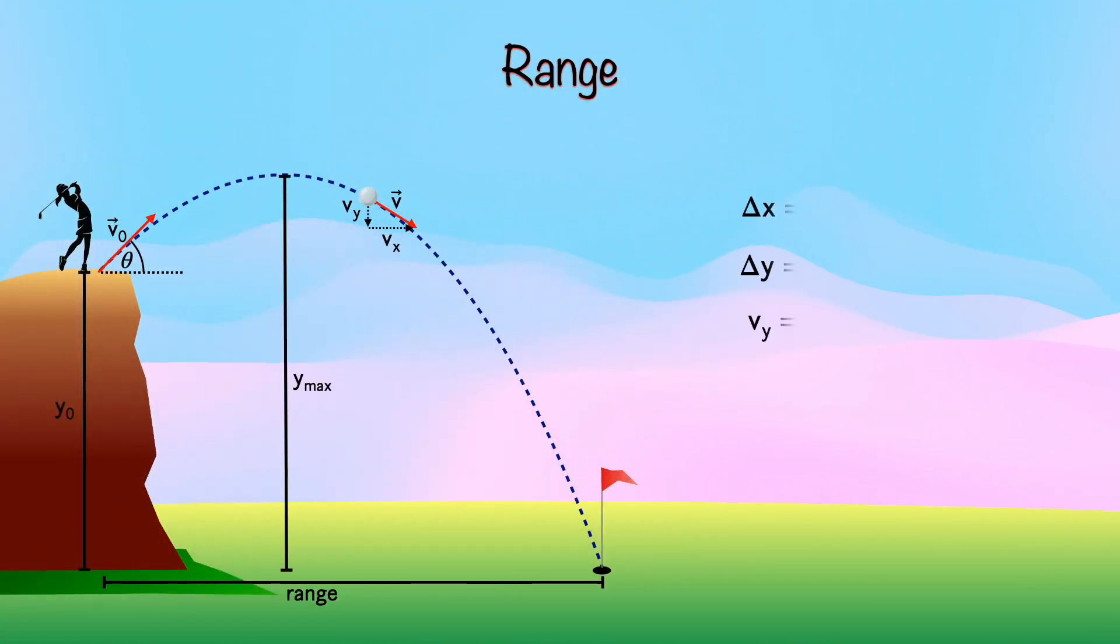So as with all projectile motion problems, we start off with our three kinematic equations. If you want to know how to get these, I derived those in a previous video. Now all projectile motion problems will involve an initial velocity followed by a parabolic trajectory until the ball lands on the ground.